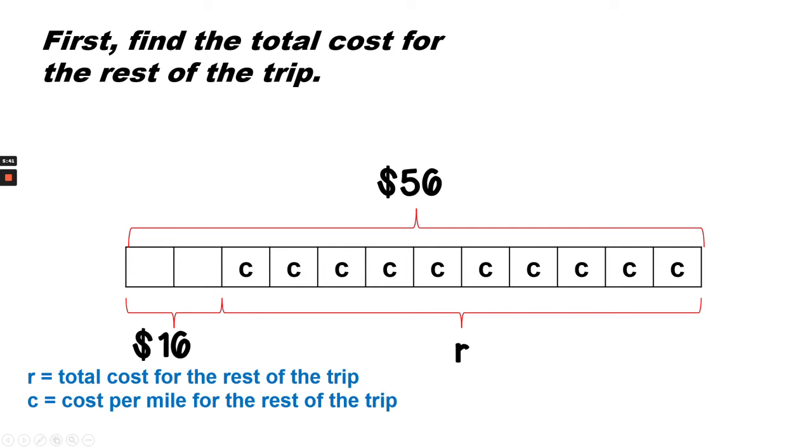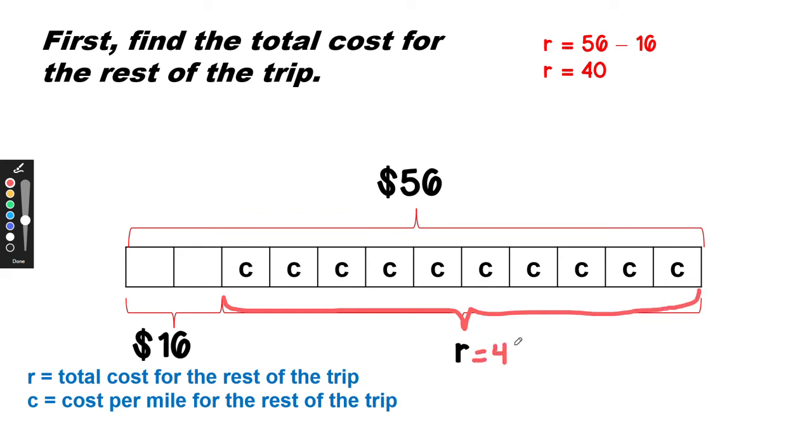On the bar diagram, we've labeled a C for each mile, and R is the rest of the trip. So we want to find the difference between 56 and 16 first. 56 minus 16 is 40. So this part equals 40. I know that's correct because 16 plus 40 equals 56. So now we have to find out how much does each of these miles cost.